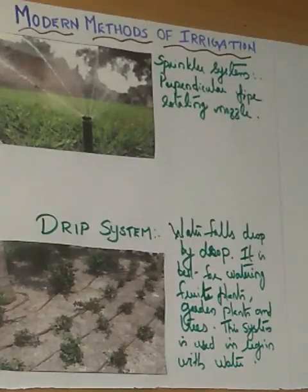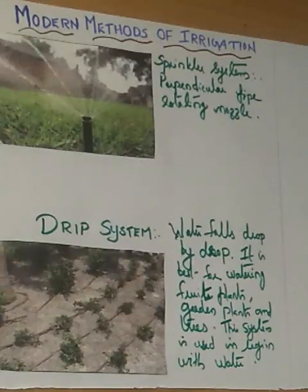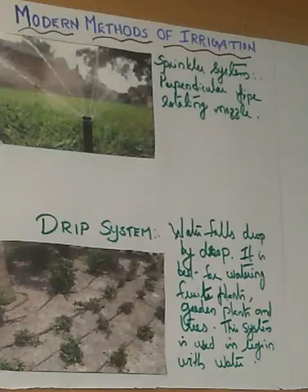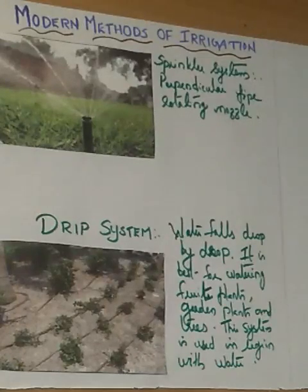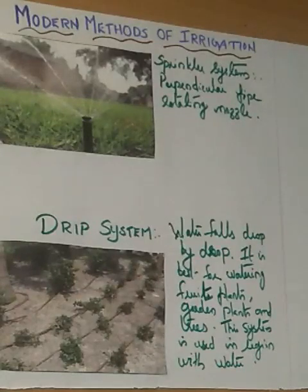Today we discussed about irrigation — providing water for agriculture is called irrigation. We discussed why water is important, sources of irrigation, and two methods of irrigation: traditional methods and modern methods. This content will be covered in the unit test. Study well, read the textbook, and you can also watch the irrigation video to understand better. Thank you, dear children.